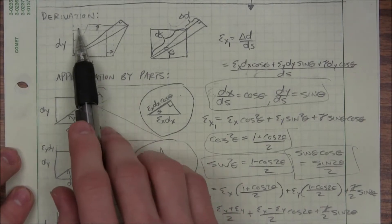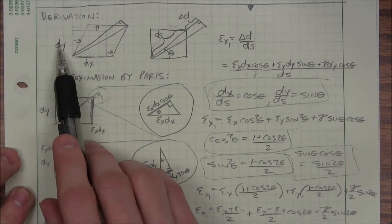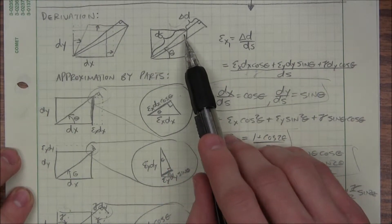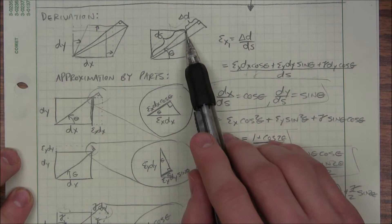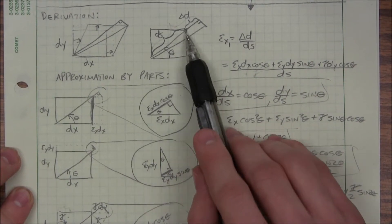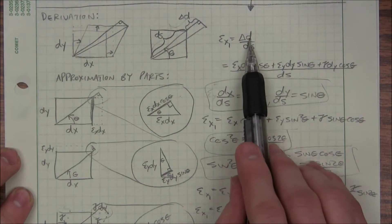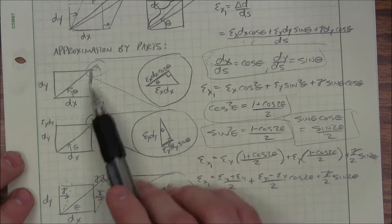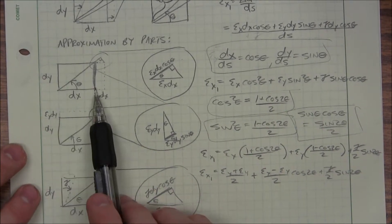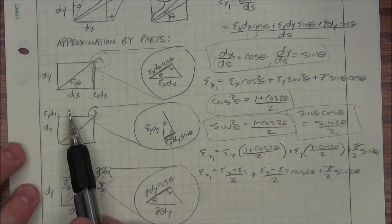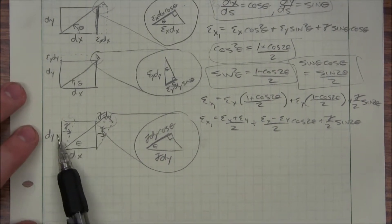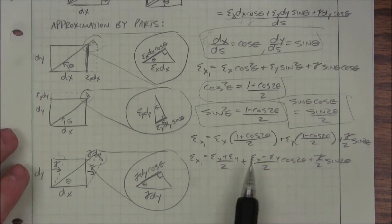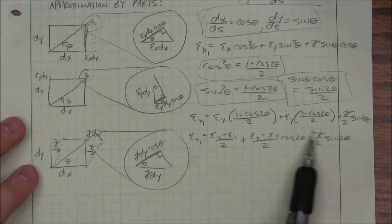Essentially, I have some infinitesimal box dx by dy with a diagonal length of ds. If I want to know what the actual strain is in that direction — the normal strain in that direction — I do change in that diagonal over the total diagonal. I calculate what that is if I elongate in the x direction, if I elongate in the y direction, or if I tilt — if I have some shear strain. I add those up together, do some trigonometry, and I get the formula.